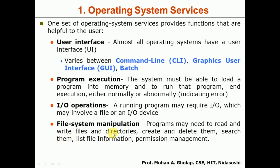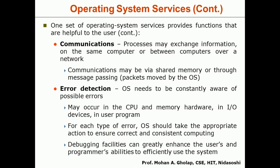The fifth service is Communication. When a program executes, a process is created. When multiple processes are executing, there must be a means by which they communicate with each other — this is called interprocess communication. Communication is one of the services provided by the operating system.